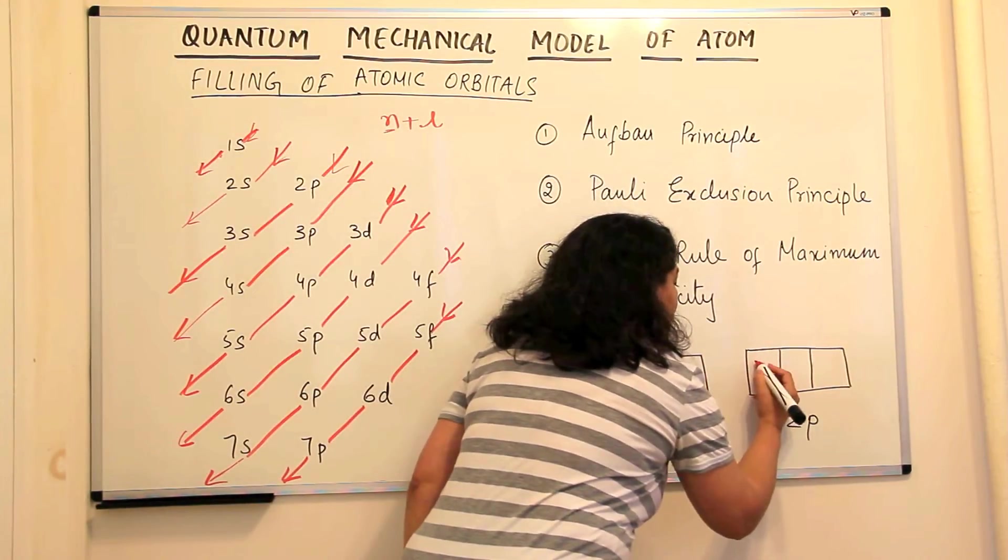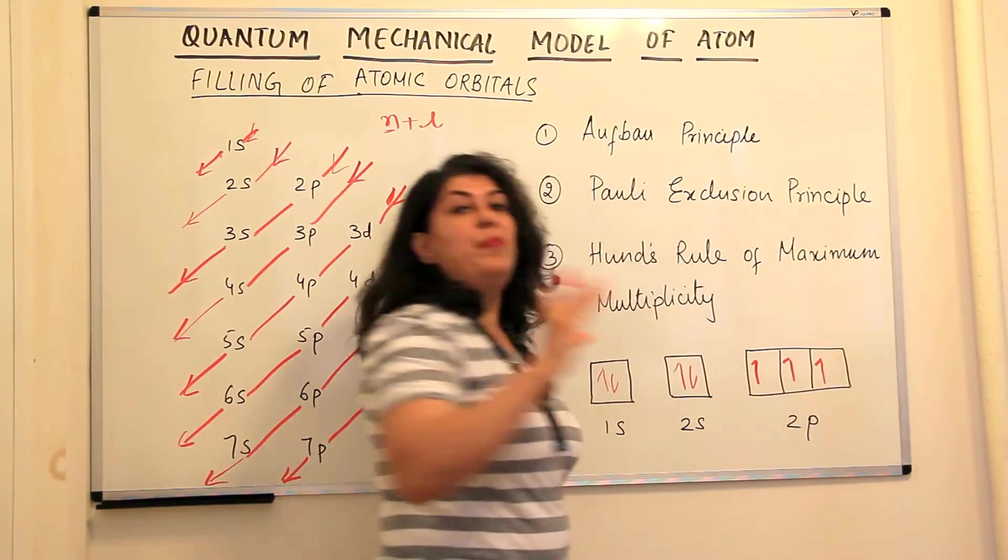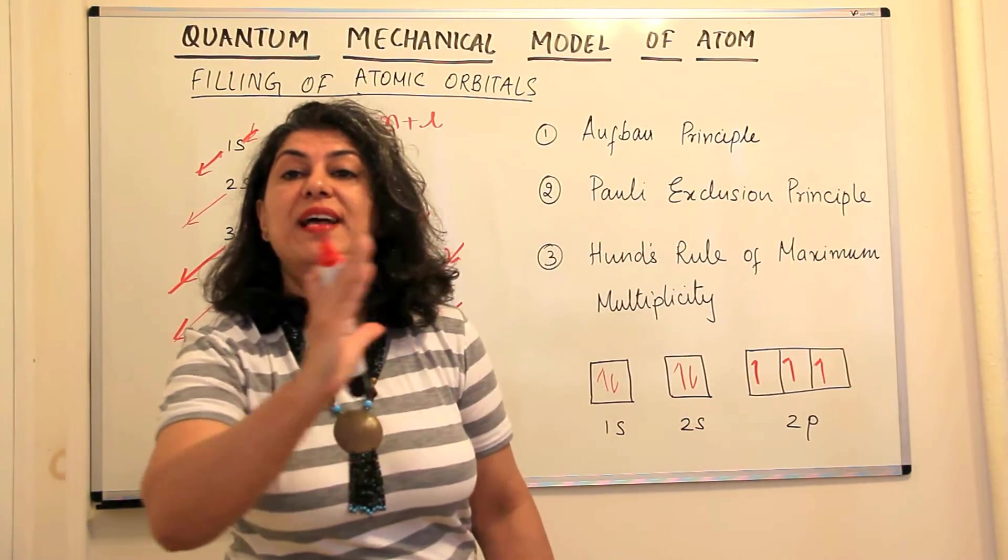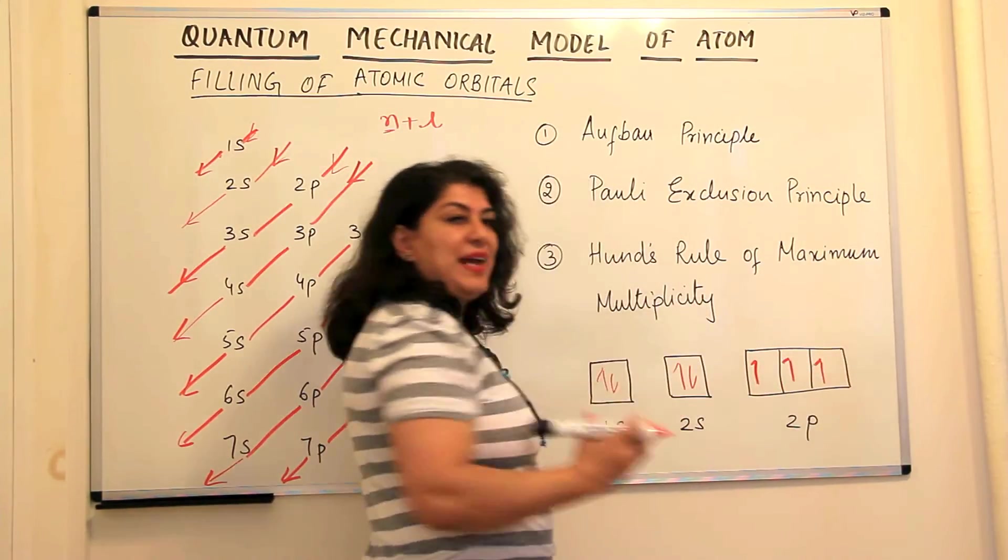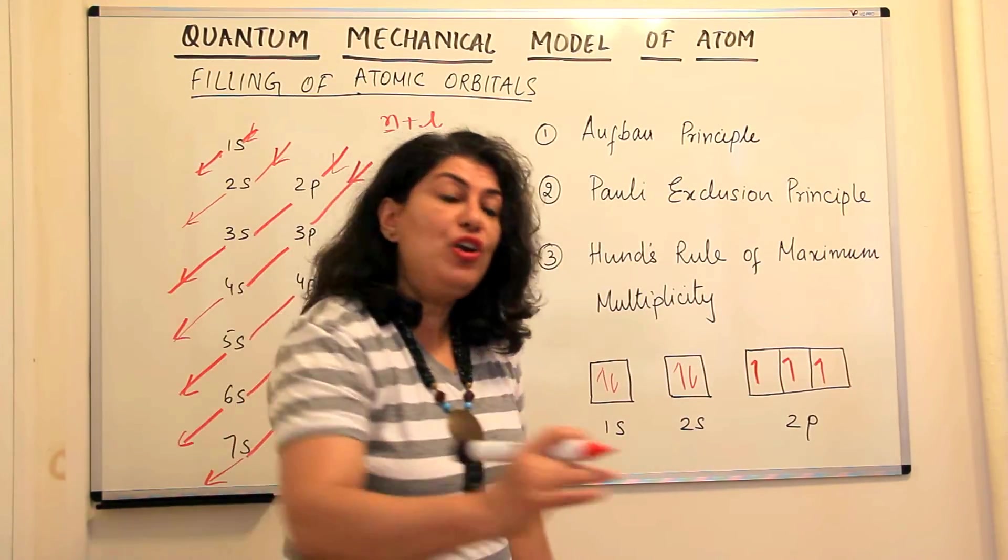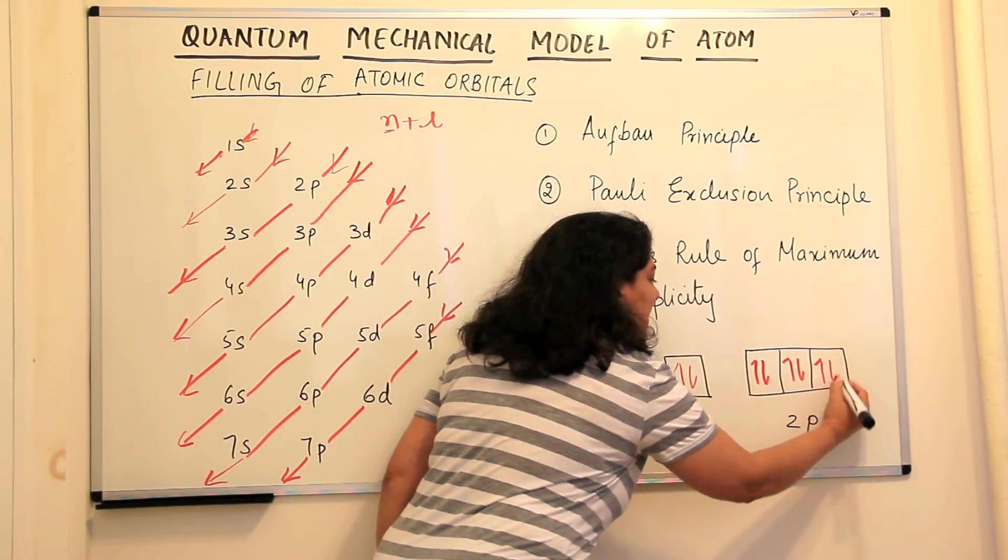each orbital, one electron goes to each orbital first. No pairing occurs unless one has gone, occupied each orbital and then the first three electrons will go to the px, py, pz. The fourth electron will start pairing, fifth and sixth electron.